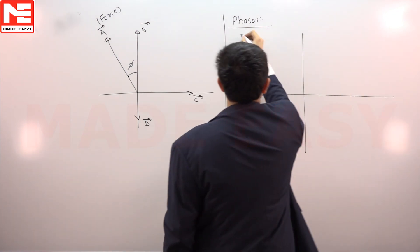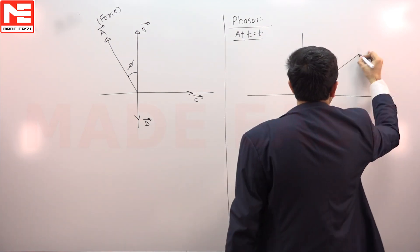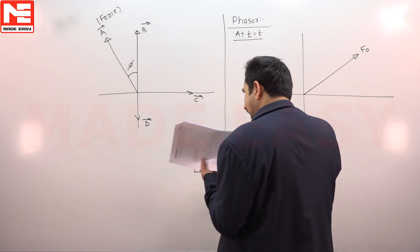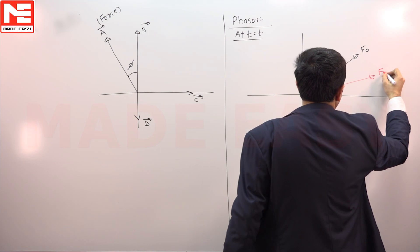We know very well if we are going to plot the force phasor at any moment time t equals t, this is your maximum unbalanced force, and just lagging by phi the inertia force will be there.